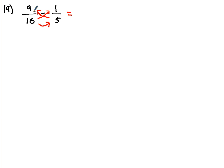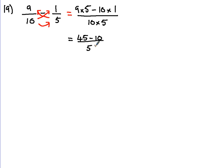So what we've got is 5 times 9, then we're taking away 10 times 1, then dividing all of that by 10 times 5. 5 times 9 is 45, take away 1 times 10 which is 10, all over 50. That leaves you with 35 over 50. You'll probably get 1 mark to that point, and then they're expecting you to divide by 5 to get 7 over 10.